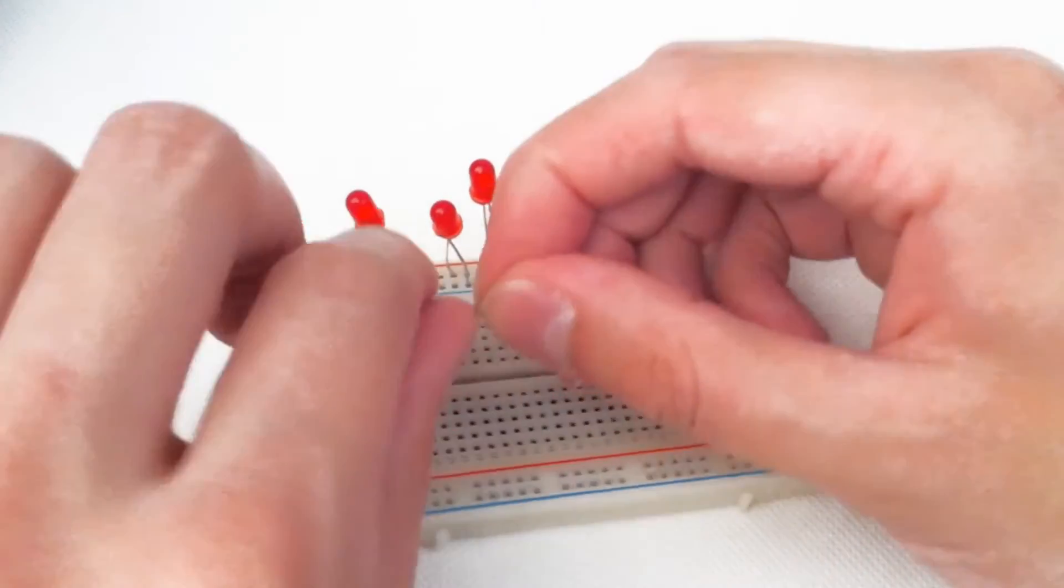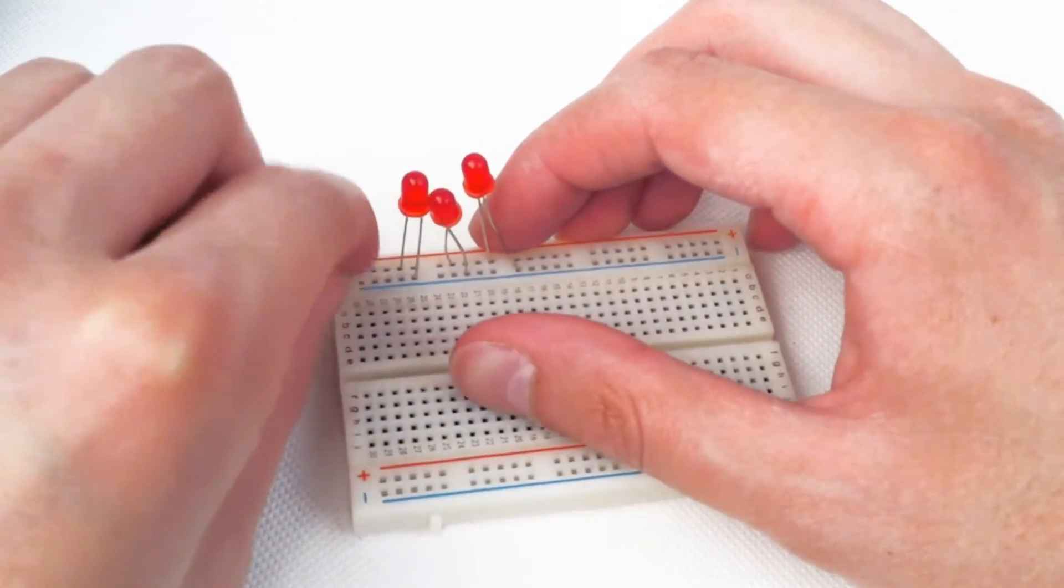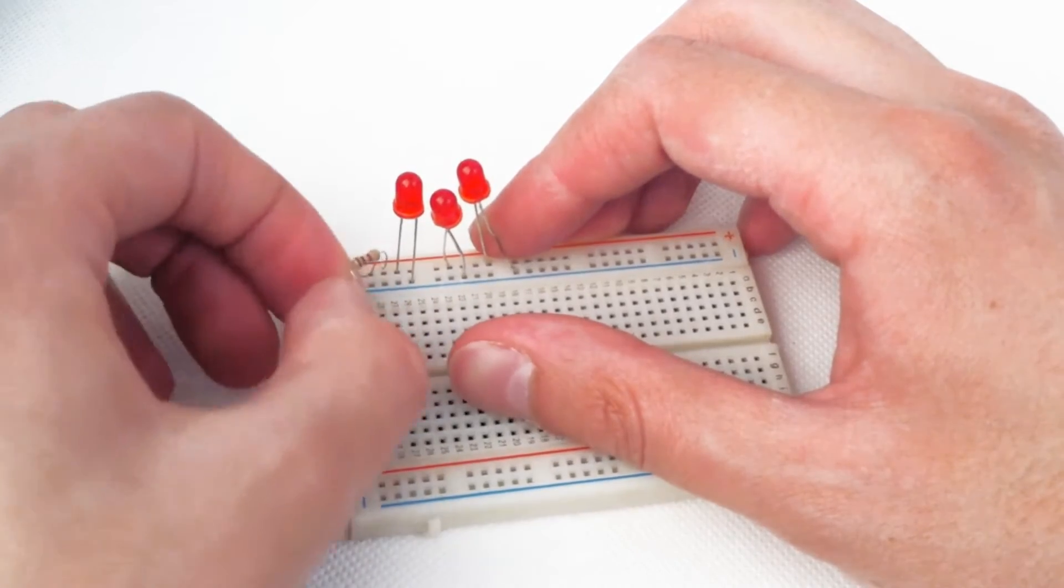1000 ohm resistor going into the anode, or showing the same channel as the positive terminals, just to make sure our LEDs don't ever get too much voltage and fry.